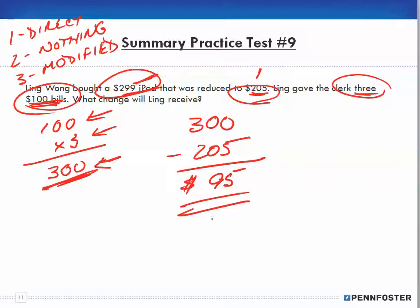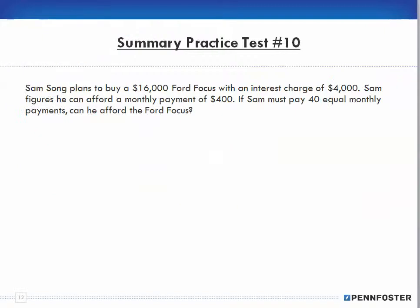If he gives $300 and the cost is only $205, he gets $95 back. The $299 has nothing to do with the problem, the $205 is directly related, and the three one-hundred dollar bills must be modified. This is a good example of the thought process for looking at information and figuring out these three categories in order to solve the problem.